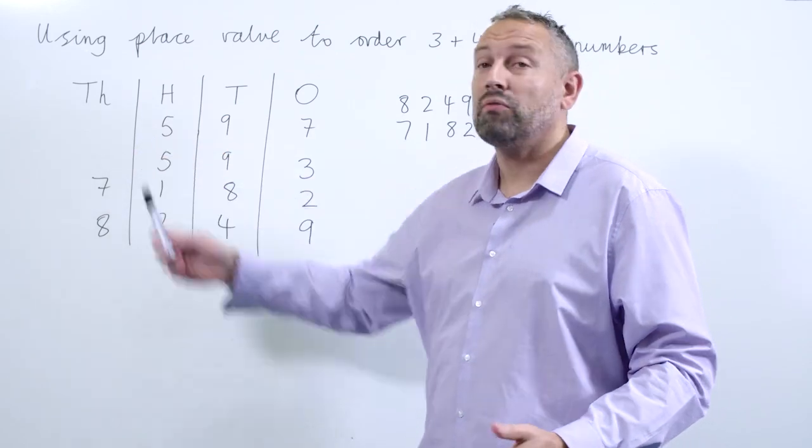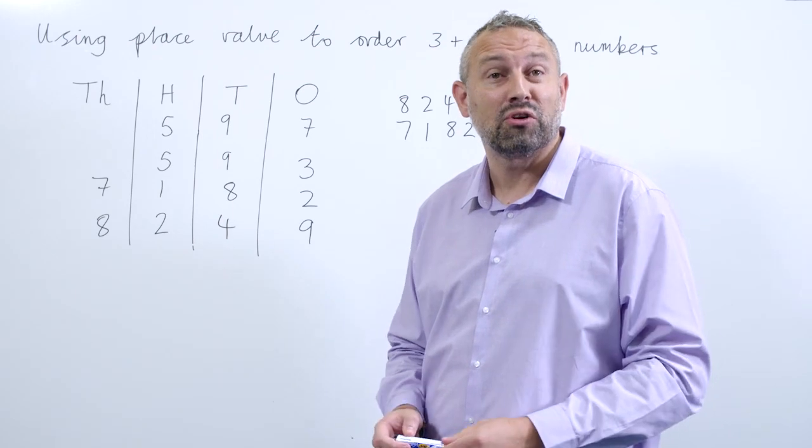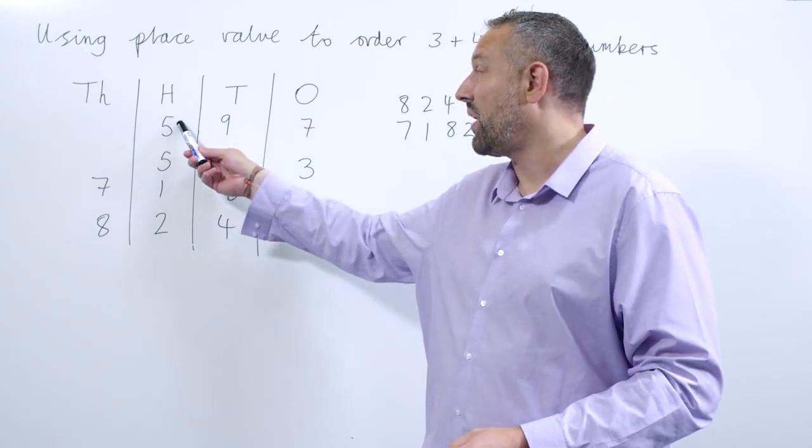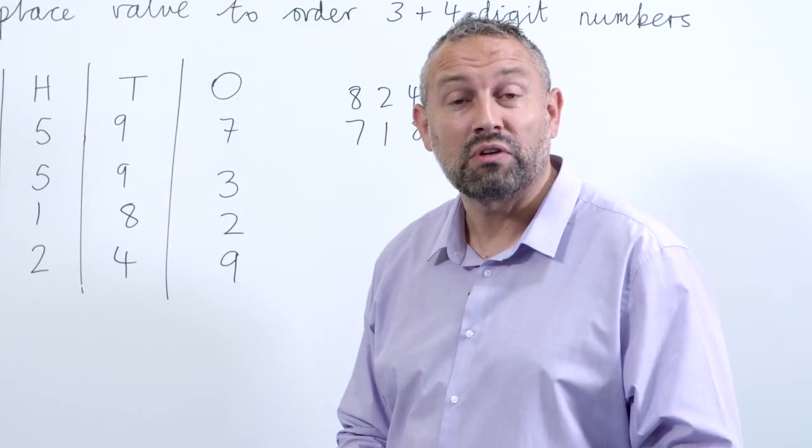And we have no value in the thousands column, so we have to move to the next column to the right. In this case it's the hundreds column, and here we have 500 and 500. They're both equal.